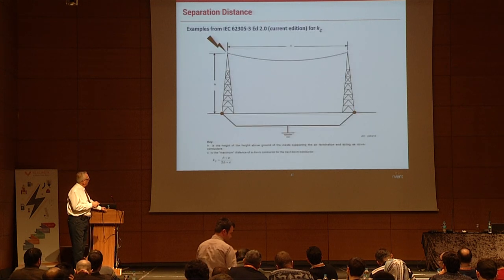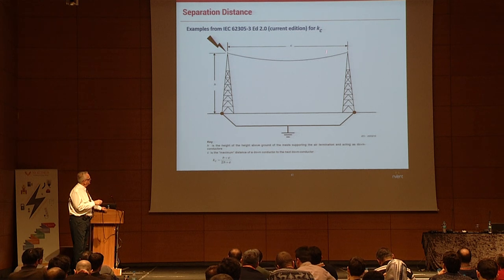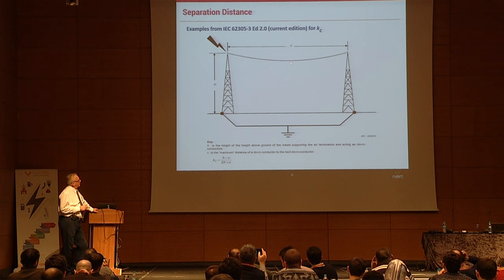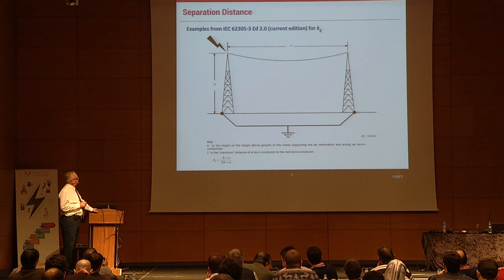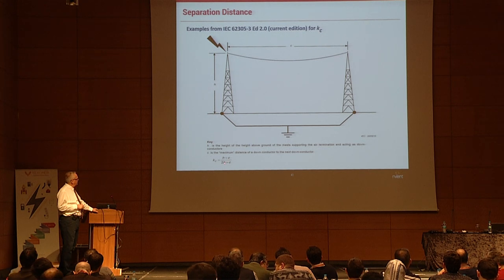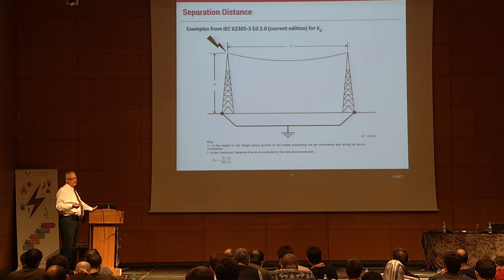The Kc calculation uses the height of the structure, the distance between the two points, and the point where lightning strikes. For example, if H is 20 meters and the distance is 40 meters, you have 60 meters divided by 80 meters = 0.75, giving a separation distance of 0.75 meters. If the strike is not exactly in the middle, more energy may go one way than the other, which changes the Kc calculation.